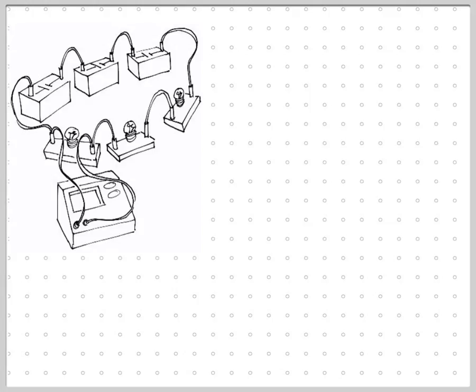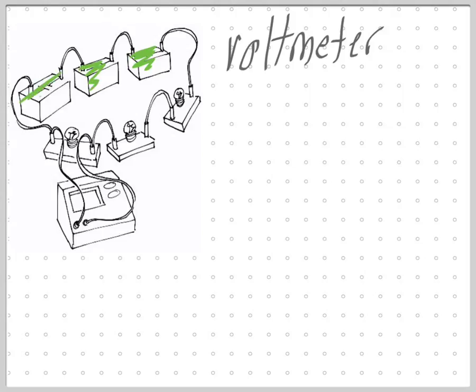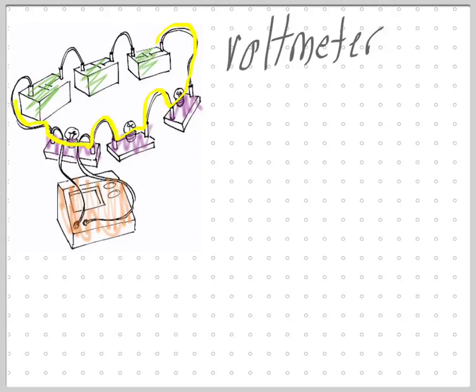Let's look at some examples. In this picture, you have an example of a voltmeter. You can see the batteries, the lights, and the wires. This giant machine here is the actual voltmeter. This circuit is going in a loop — this is what we call a series circuit. The current is running through all those lights and batteries in one giant loop, making one entire circuit.